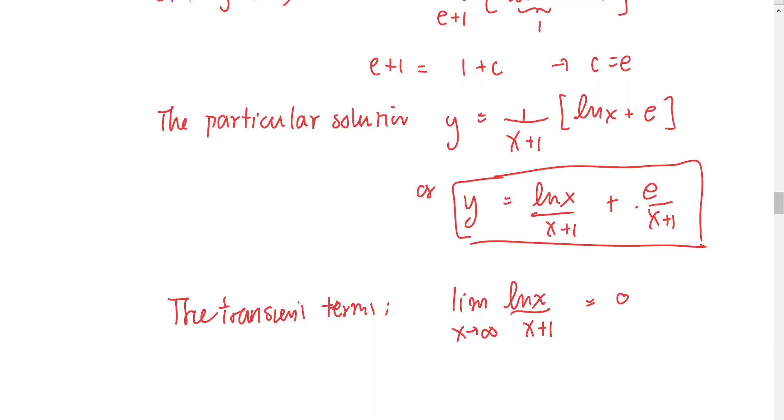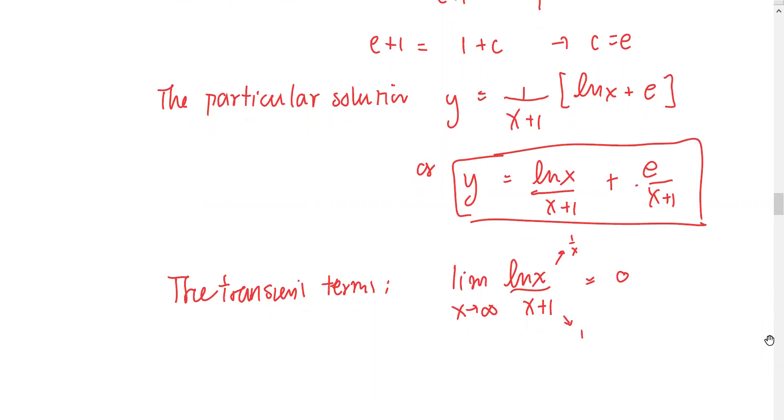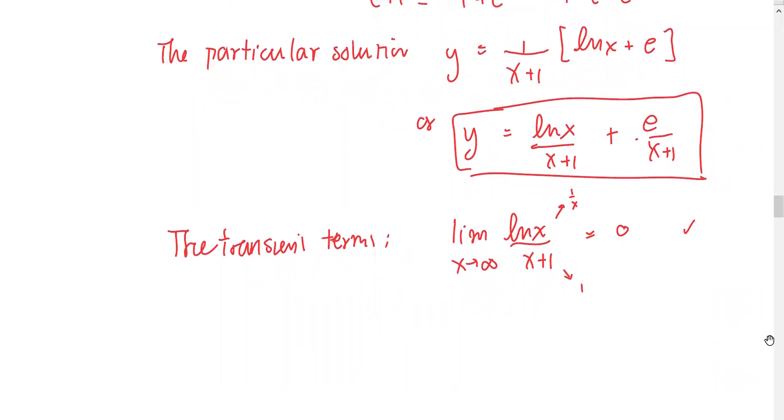You can use L'Hôpital's rule. The derivative of the numerator gives us 1/x, and the derivative of the denominator gives us 1. We find the limit of 1/x, which approaches zero. So this term is a transient term.